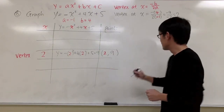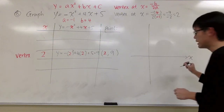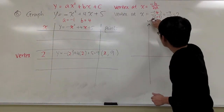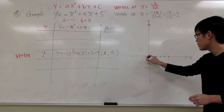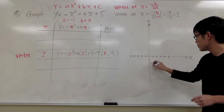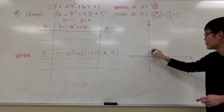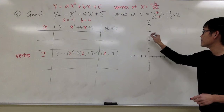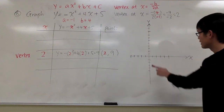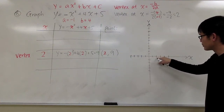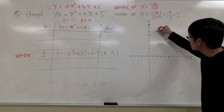Let me show you how to graph this. Here is the x-axis and the y-axis. I'll mark off units — 1 through 5 on the x-axis, and since the vertex y is 9, I need to go up to 9 on the y-axis. The first point is (2, 9): go to x equals 2, then up to 9. That's my first point — the vertex. One point is not enough, so let's finish the table.